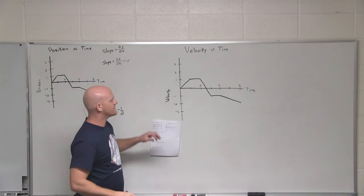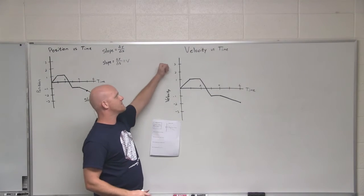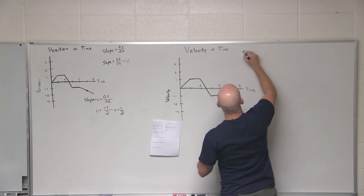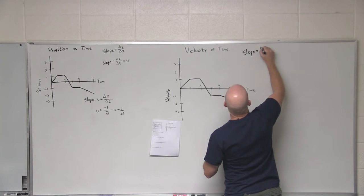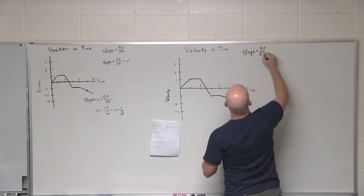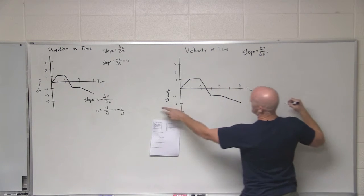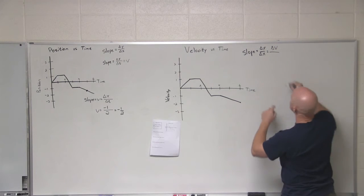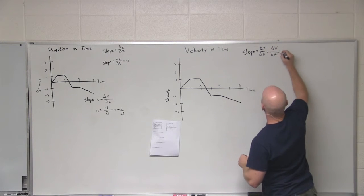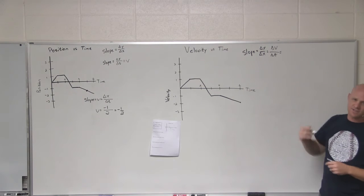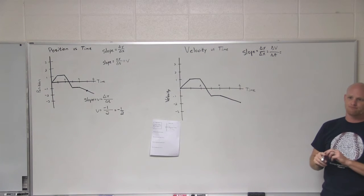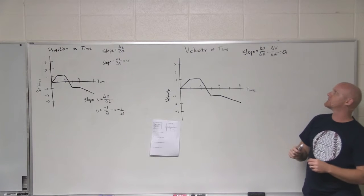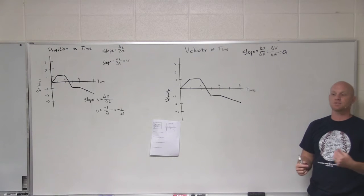Let's take a look at our velocity versus time graph, starting with the slope. Slope is rise over run, or delta y over delta x. Our y-axis is velocity, so that's delta v, and our x-axis is time, so that's delta t. The change in velocity over the change in time is acceleration.